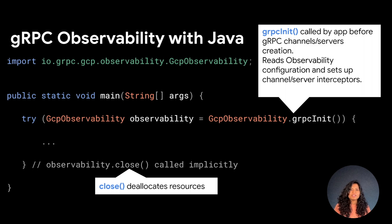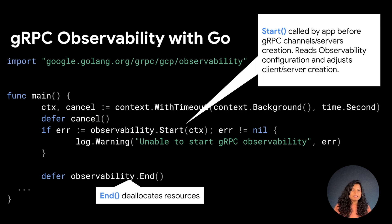As Sanjay said earlier, observability is available in Go. Let's look at the Go code snippet, which is similarly simple. In your application main method, you call observability.start and pass in a context to start observability. Data will be generated and exported based on the configuration. Note that observability.end is called to end observability.